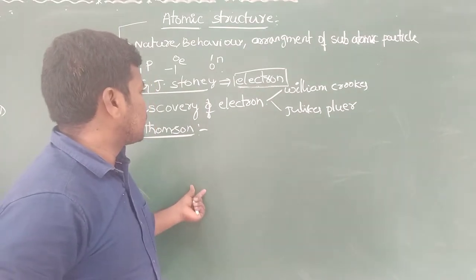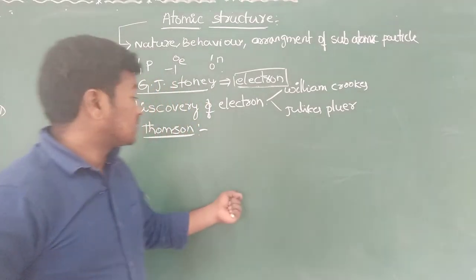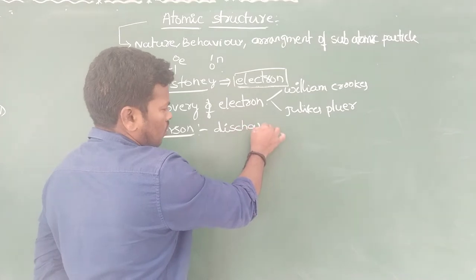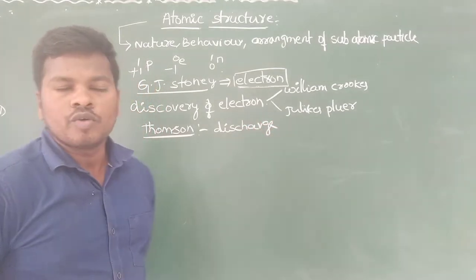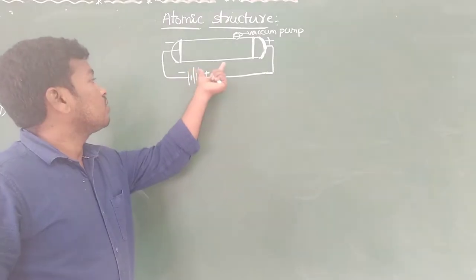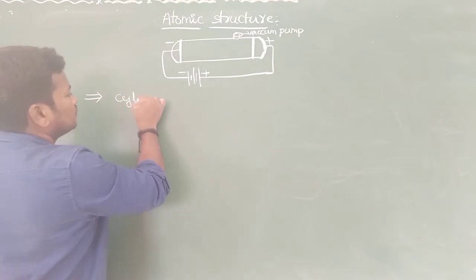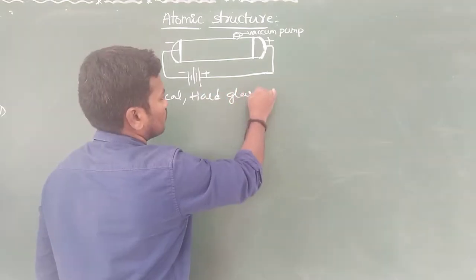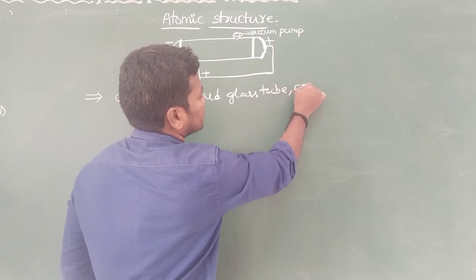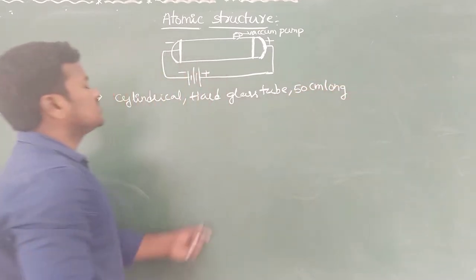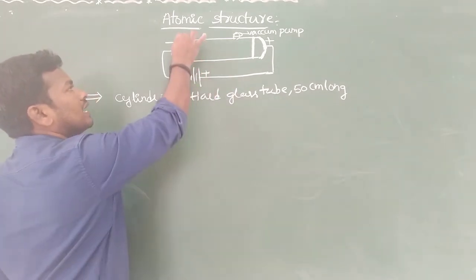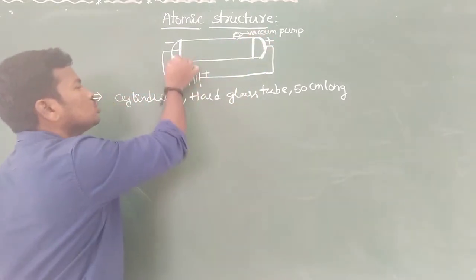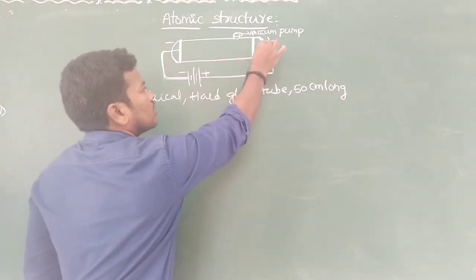Later, the scientist J.J. Thomson did some experiments, and with the help of those experiments, the existence and nature of the electron was confirmed. The existence and nature of the electron was confirmed by conduction of electricity through gases by J.J. Thomson, who also used the discharge tube experiment. The discharge tube is a hard glass tube, cylindrical, about 50 cm long, sealed at both ends with two electrodes — two metal plates inside the discharge tube.